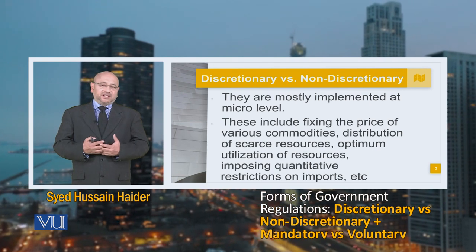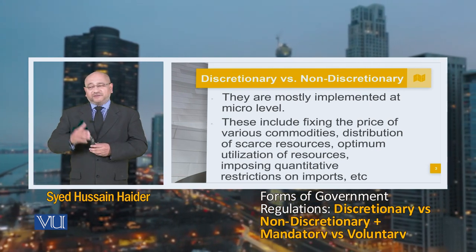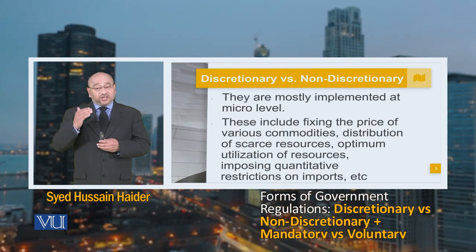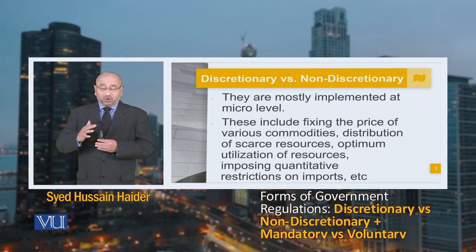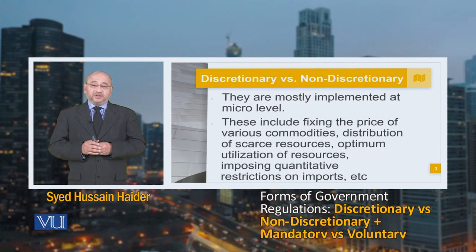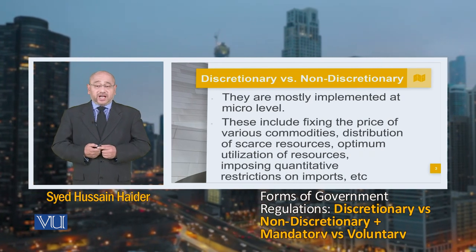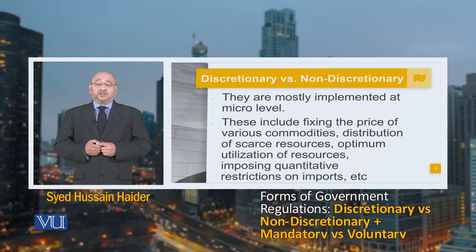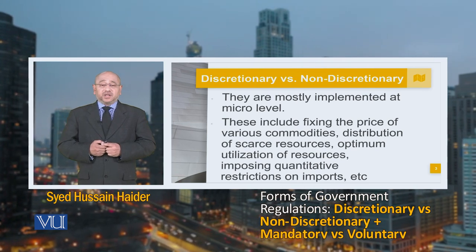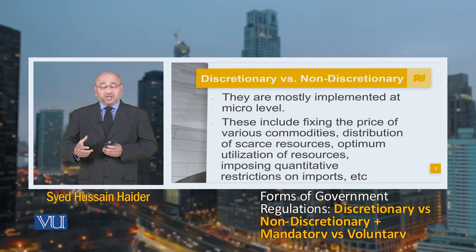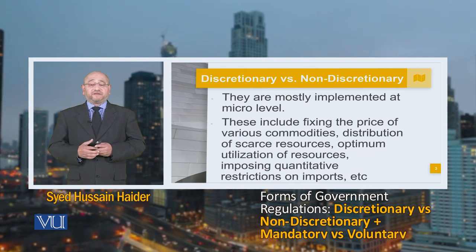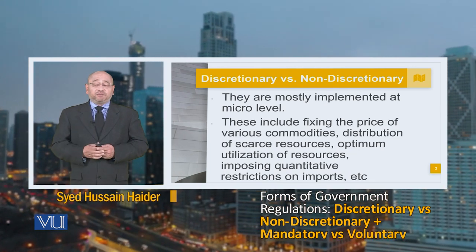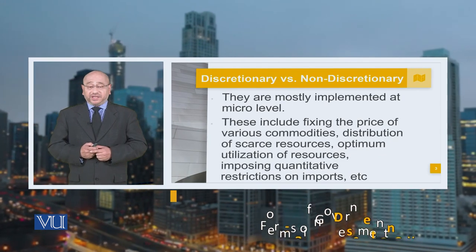These discretionary regulations take place at the federal level, the provincial level, and at the district or tehsil level, with variance across each. They could also be a national SRO or a particular regulatory fixation applicable upon the different citizens of society.